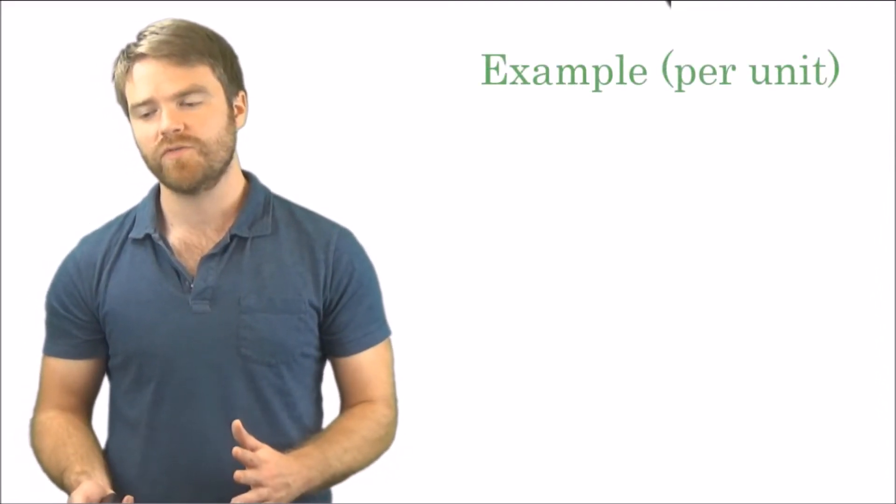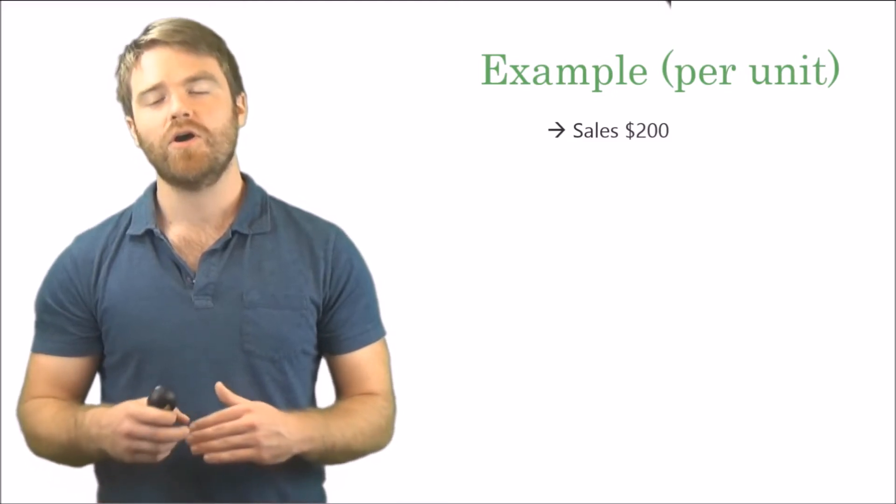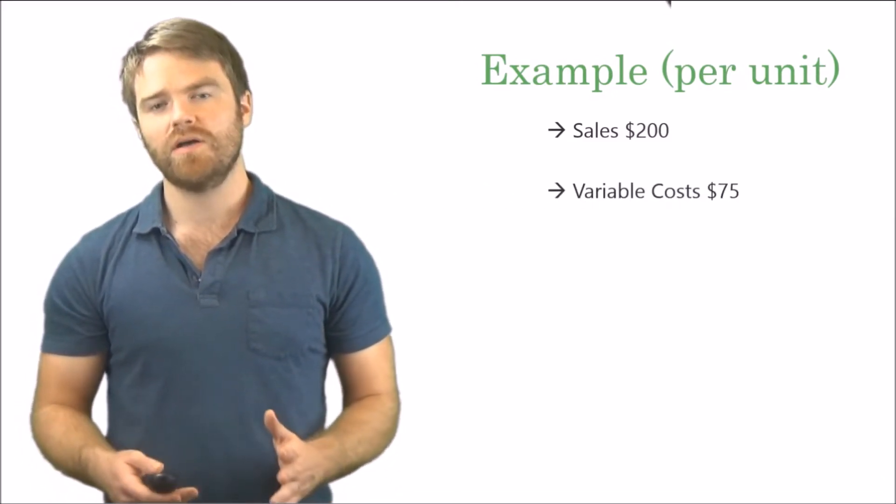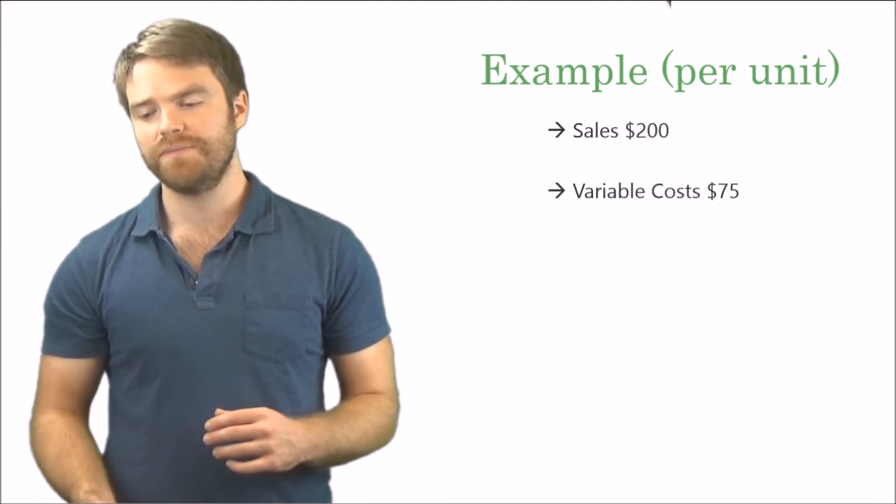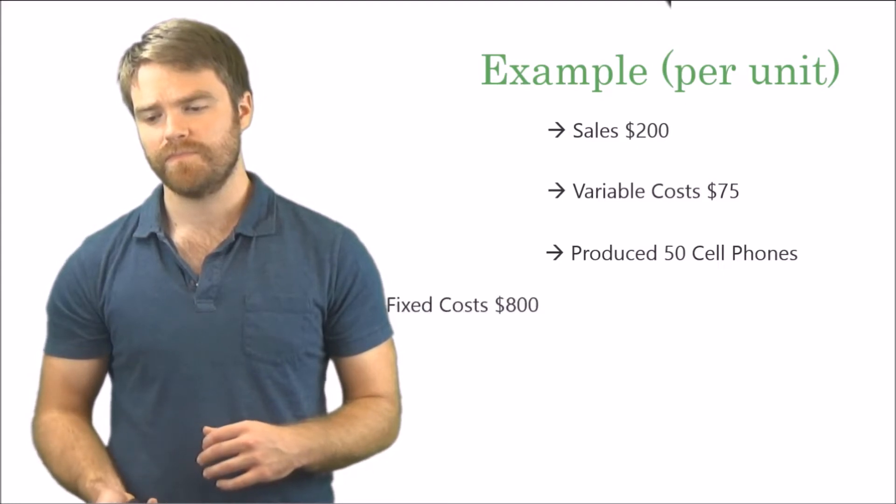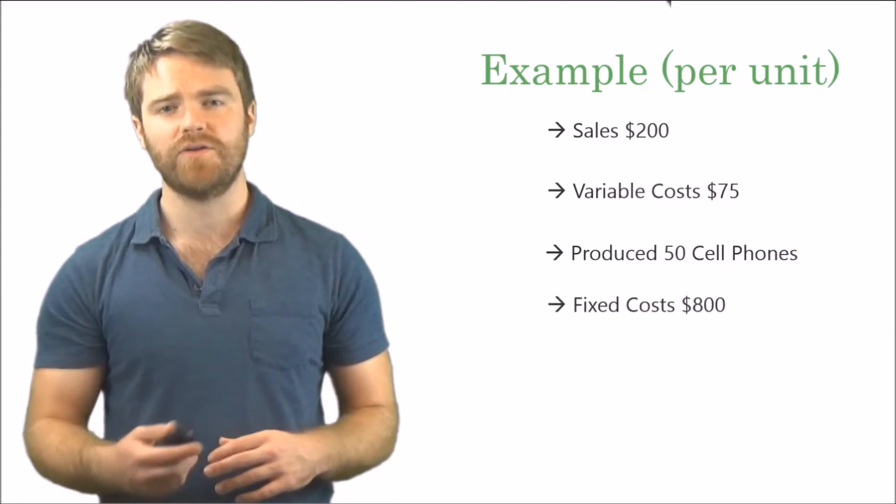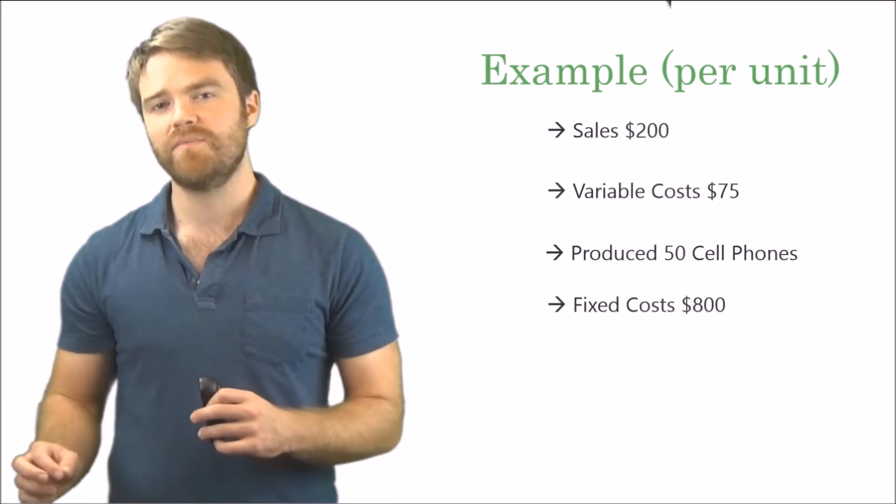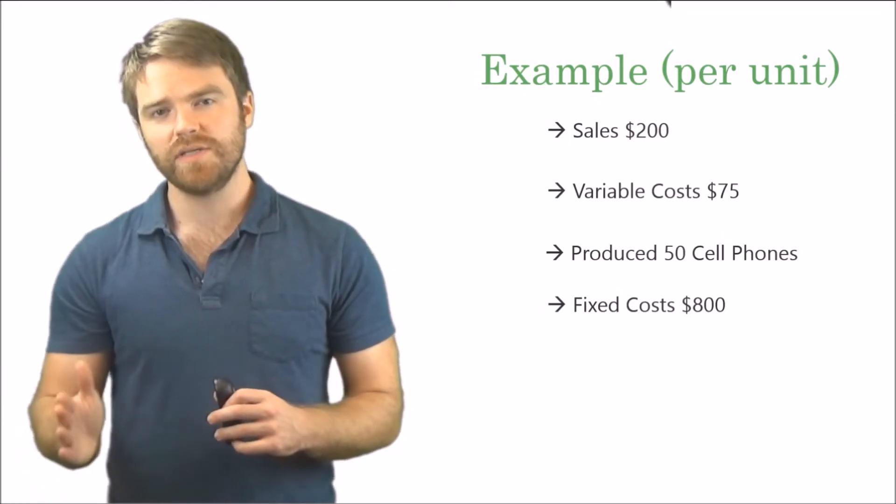Okay, let's go through a little example here. This is on a per unit level. So for every unit you have to sell it for $200. Now your variable costs are equal to $75 a unit. You produced 50 cell phones and your fixed costs are $800. So what I want you to do is pause this video. I want you to write down these numbers, okay? You're going to use these in the next slide. We're going to calculate.